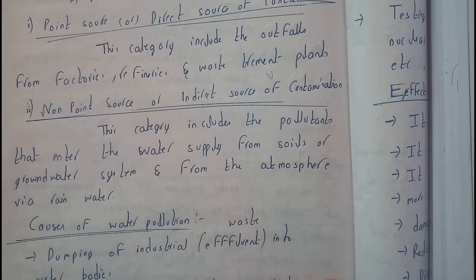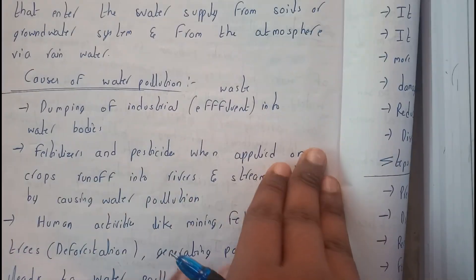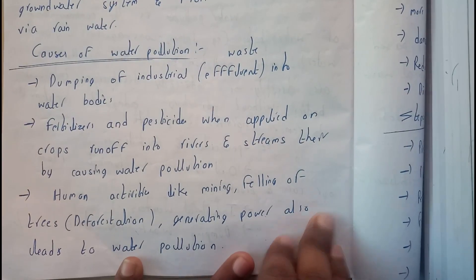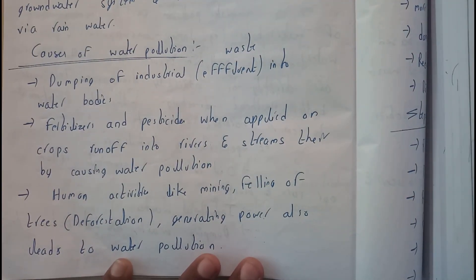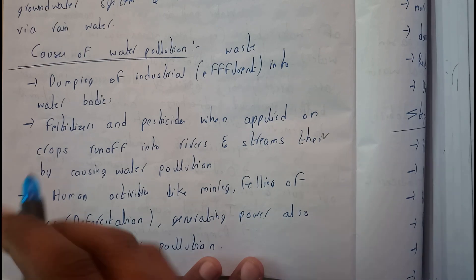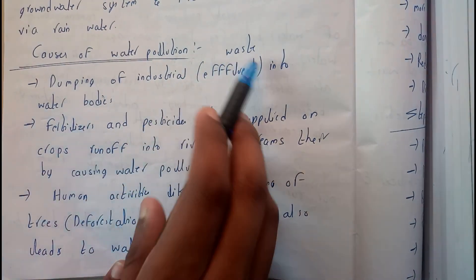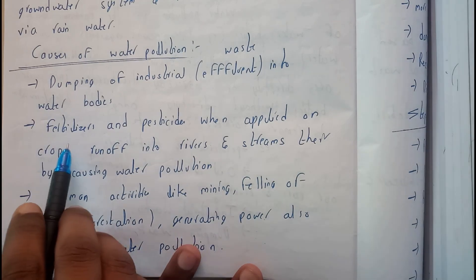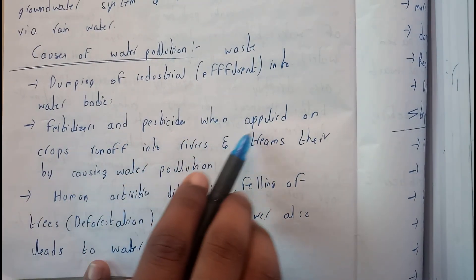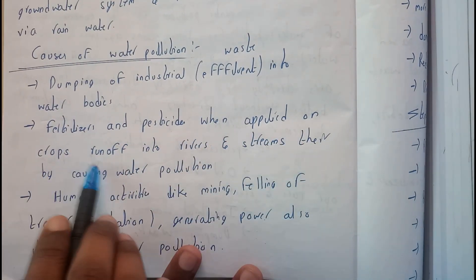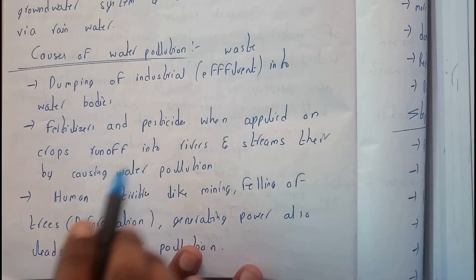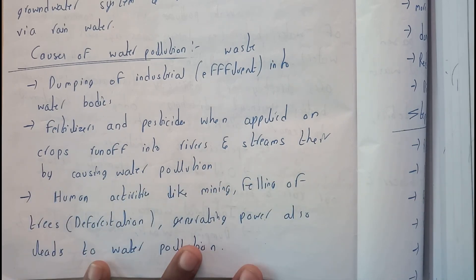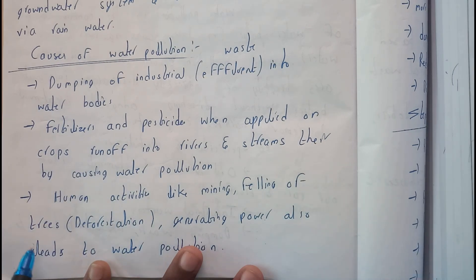Now let us go through the causes of water pollution. Dumping of industrial wastes into water bodies is a cause of water pollution. Usage of fertilizers on crops — when applied, runoff flows into rivers and streams, thereby causing water pollution.